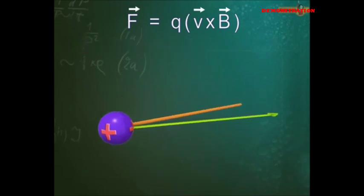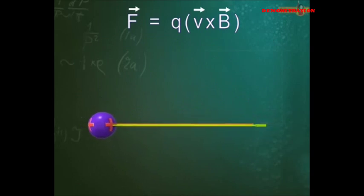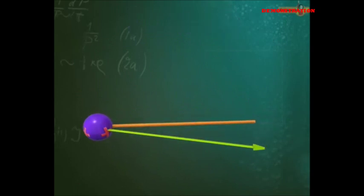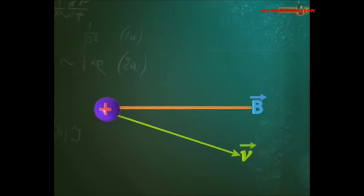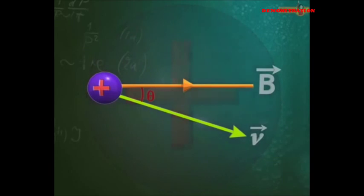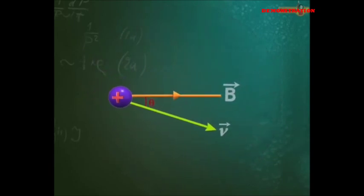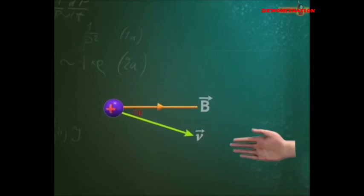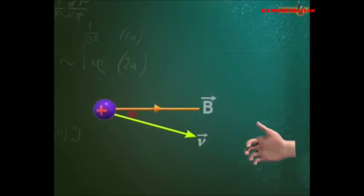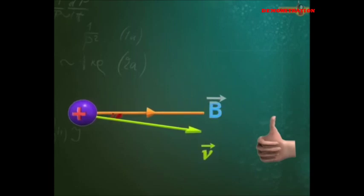This force changes the direction of motion of the charged particle. Let the angle between the velocity of the charged particle and the magnetic field be theta. The direction of force experienced by the particle is given by the right-hand rule, which states that if you curl the fingers of your right hand from V to B, then the thumb gives the direction of the force. Thus, the force is perpendicular to the plane containing V and B and acts in the upward direction.